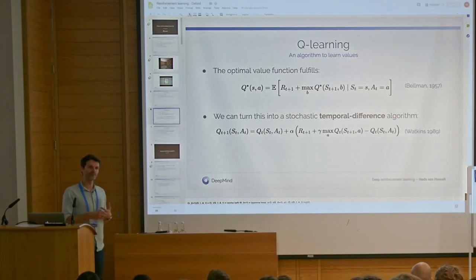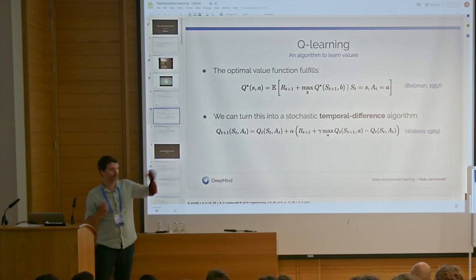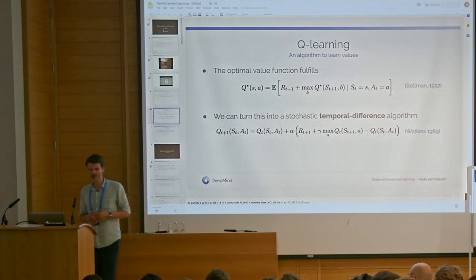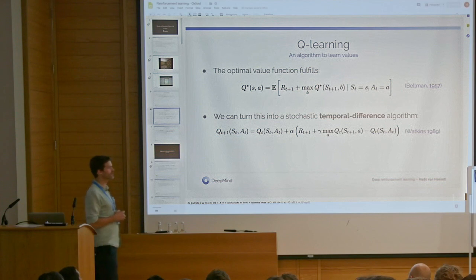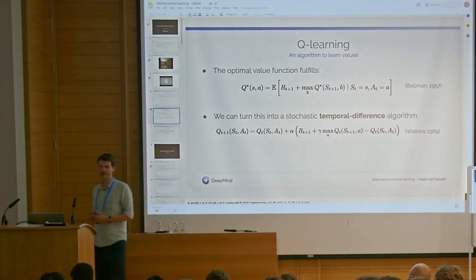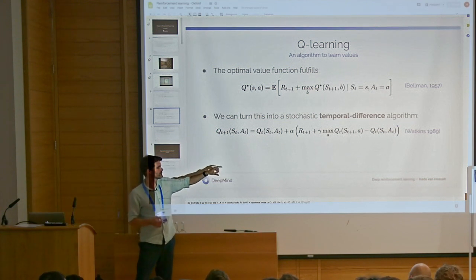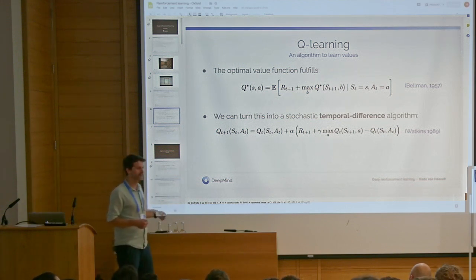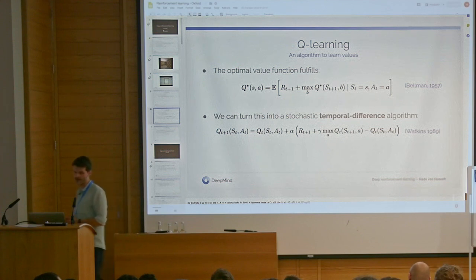If at some point the term between the brackets — the value of the state-action pair minus the reward plus the value at the next state — is zero, the update will be zero and the algorithm has converged, finding the optimal solution. In general there might be noise, so the reward and next state value might be noisy and it might never exactly be zero. What the algorithm finds instead is that the term is zero in expectation. It does so with small incremental updates using a step size parameter alpha. In the tabular case this might be something like 0.1. The whole point is to average over the noise. If you're in a stationary setting you might want to decay this over time to find the optimal solution in the limit.